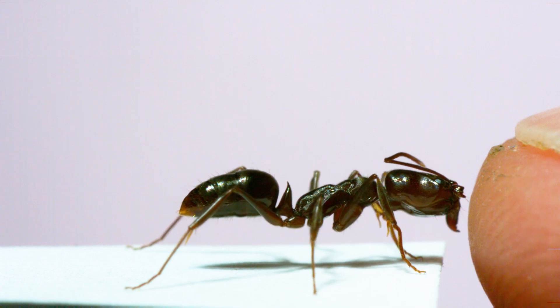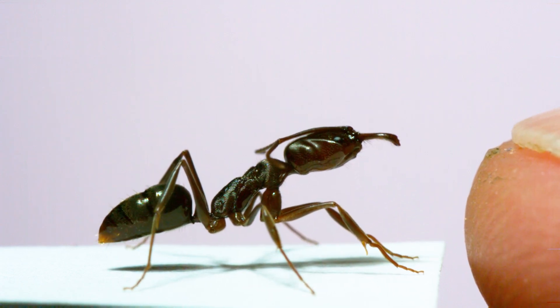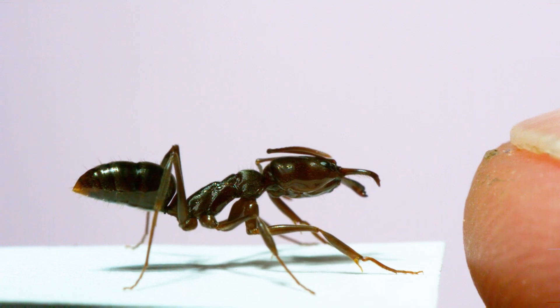So against a tough skin thing like a fingertip, mandible strikes are deflected, but against smaller, soft-bodied insects, these strikes can be deadly.